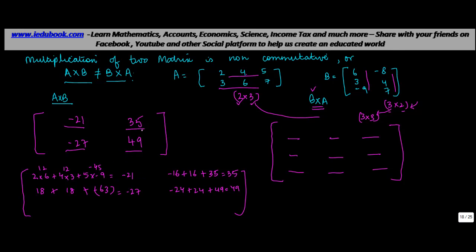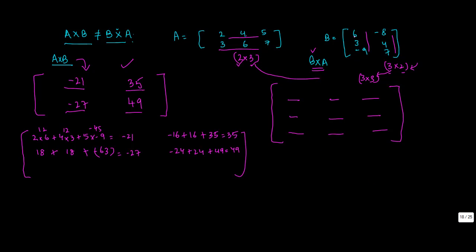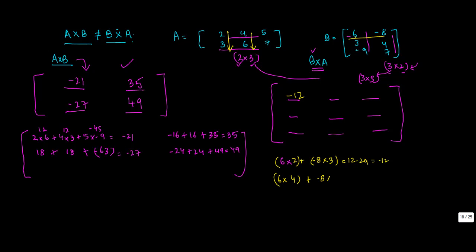Now let's work on B×A. For first row, first column: 6×2 + (-8)×3 = 12 - 24 = -12. For first row, second column: 6×4 + (-8)×6 = 24 - 48 = -24.